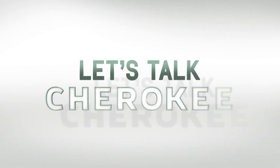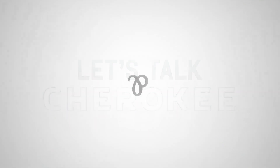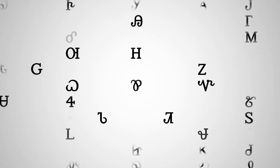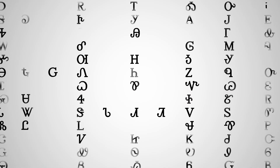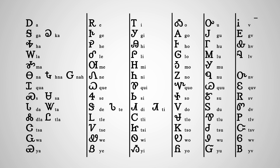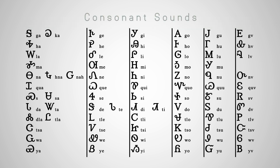Let's talk Cherokee. The Cherokee syllabary is the writing system invented by Sequoia. Each character represents a syllable in the Cherokee language. In this syllabary chart, the top row contains the six vowel sounds. The subsequent rows include the consonant sounds.